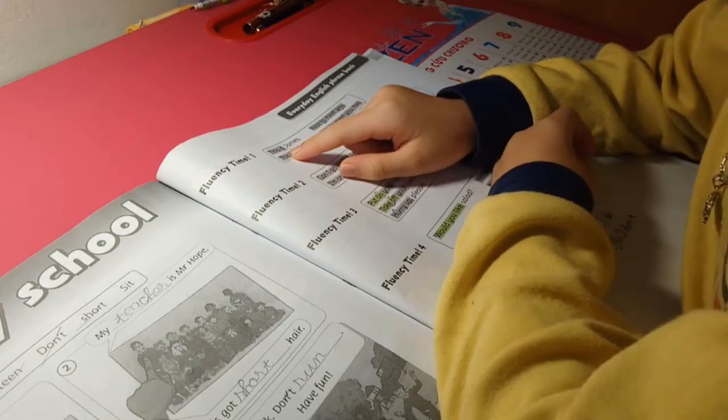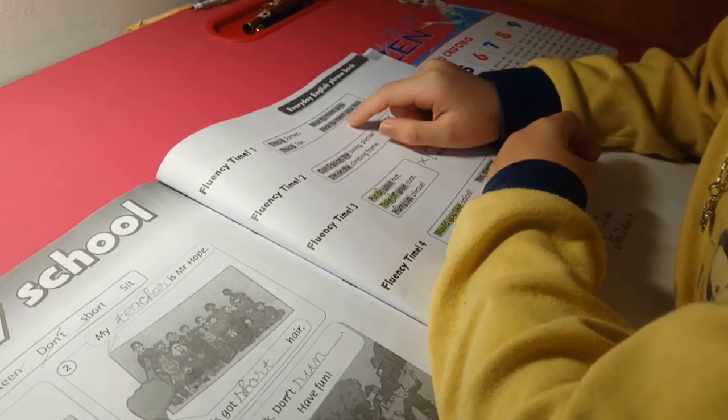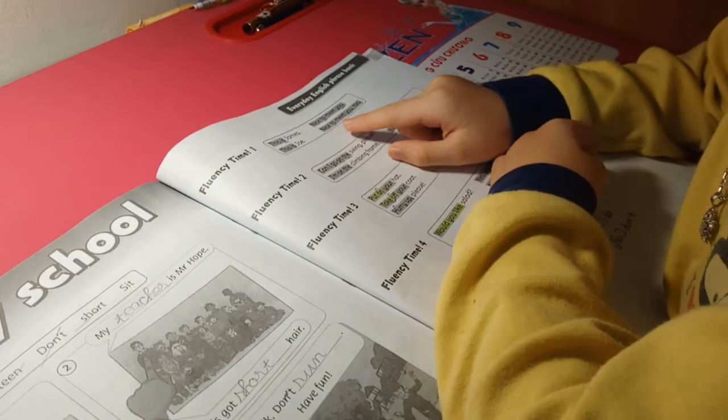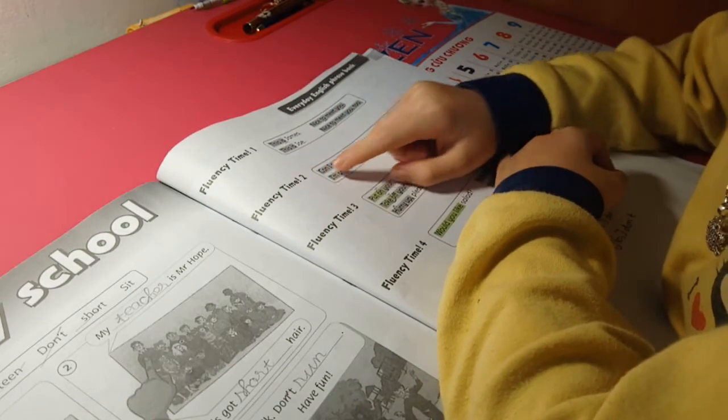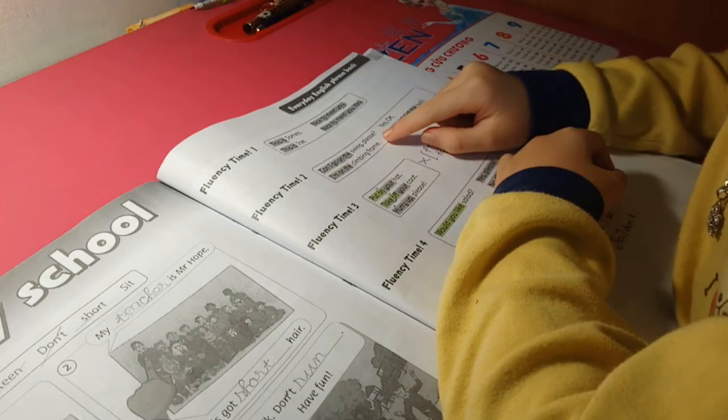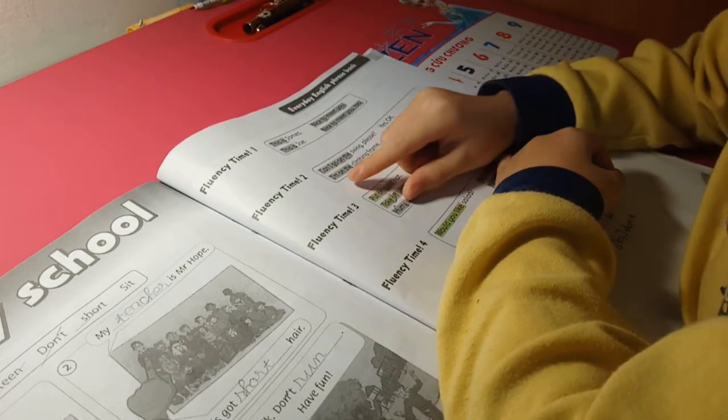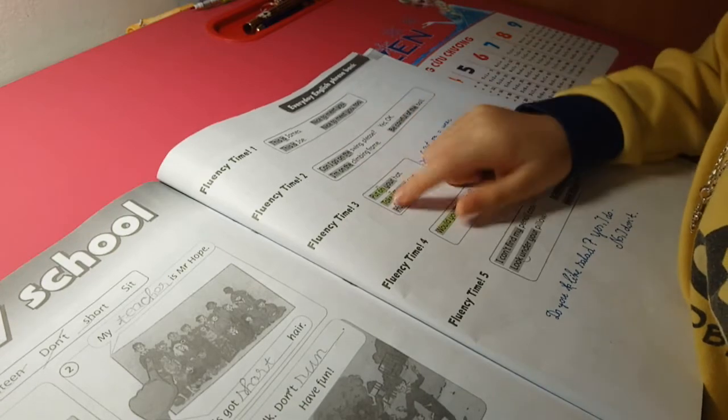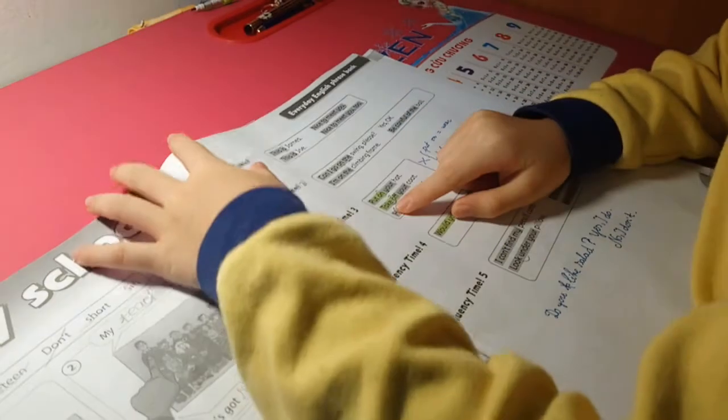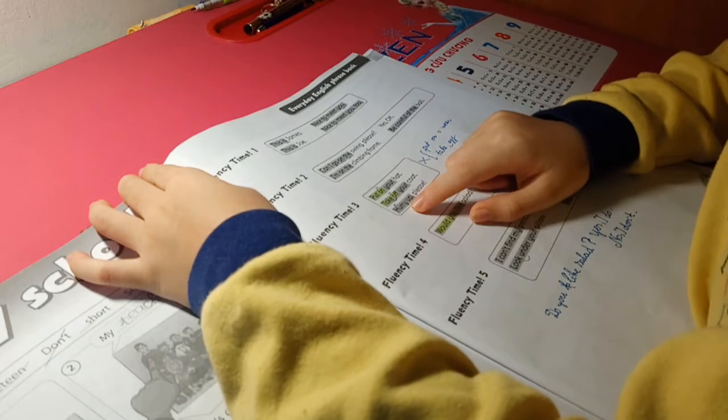Fluency time one. This is James. Nice to meet you. This is Joe. Nice to meet you too. Fluency time two. Can I go on a swing please? Yes, okay. I'm on a climbing frame. Be careful of the ball. Put on your hat. Take off your coat. Hurry up please.